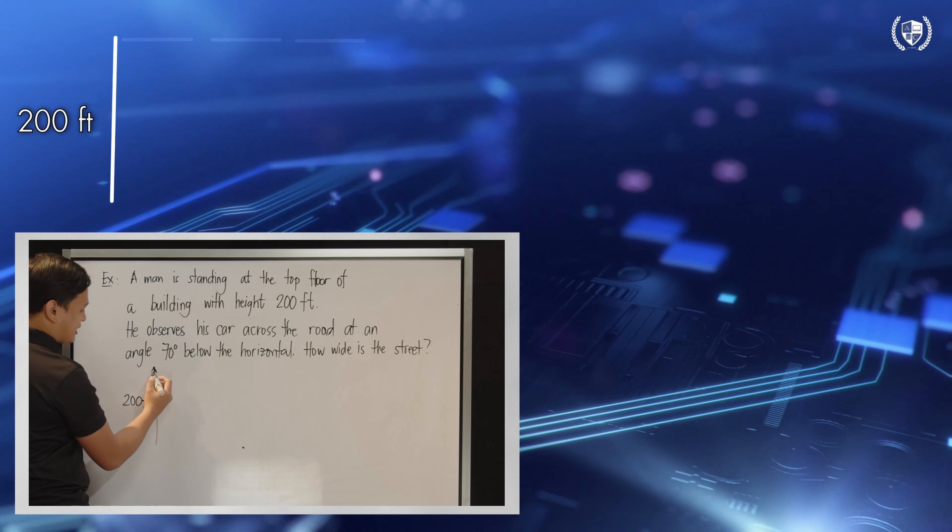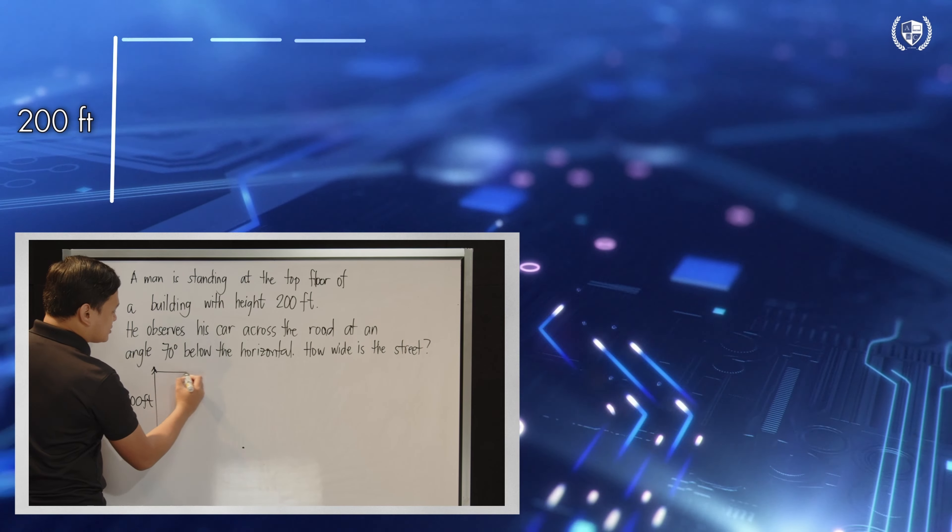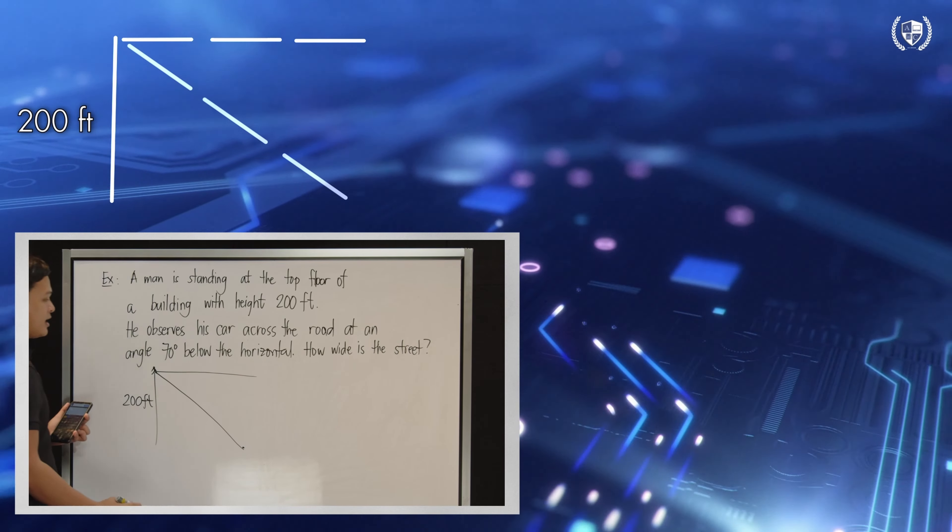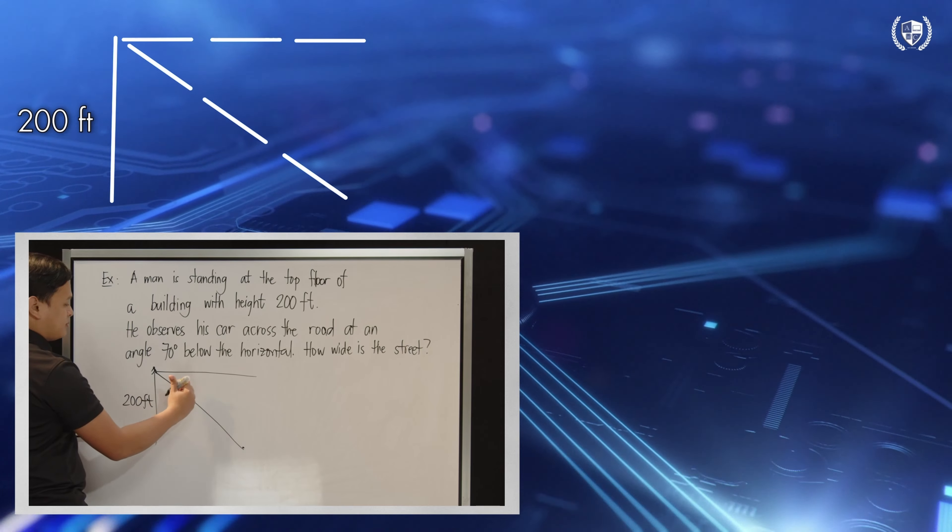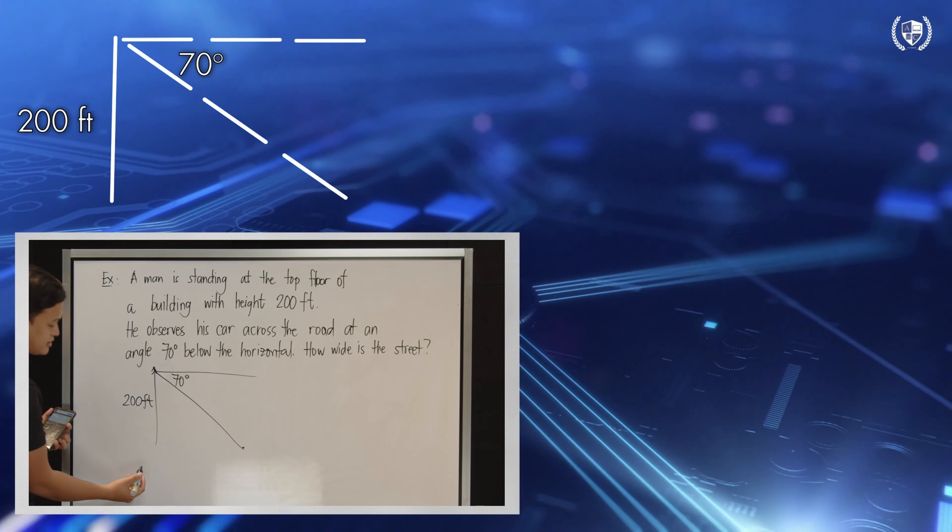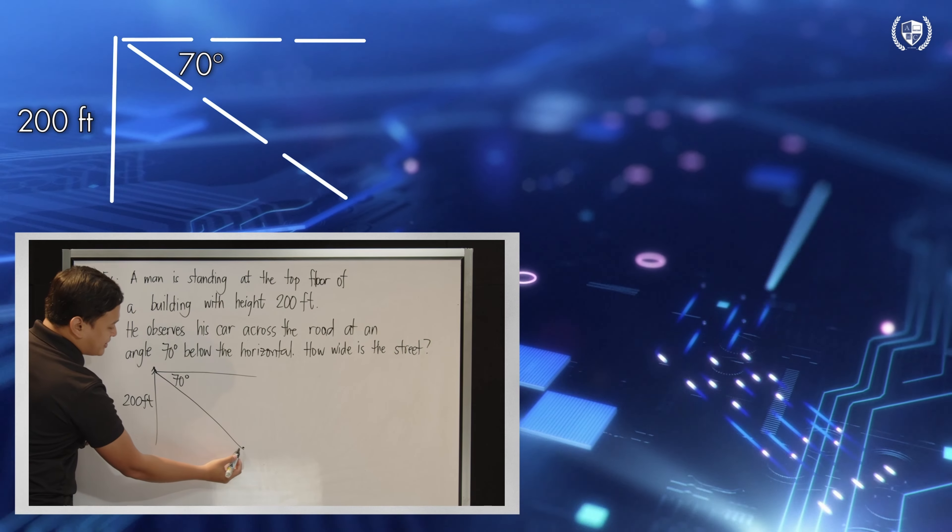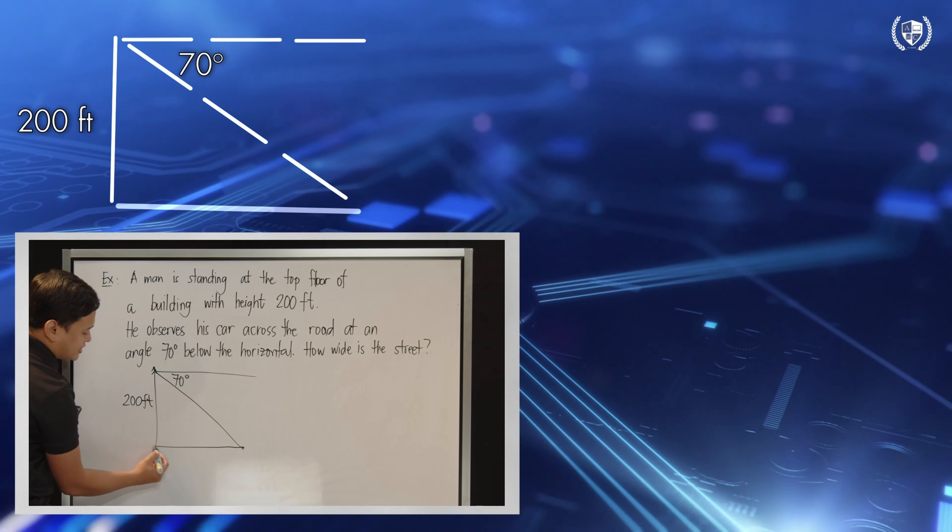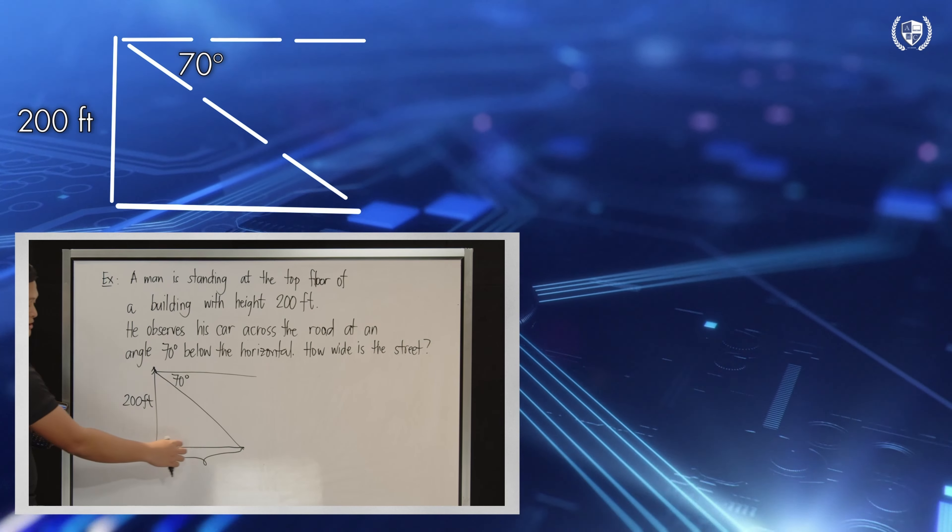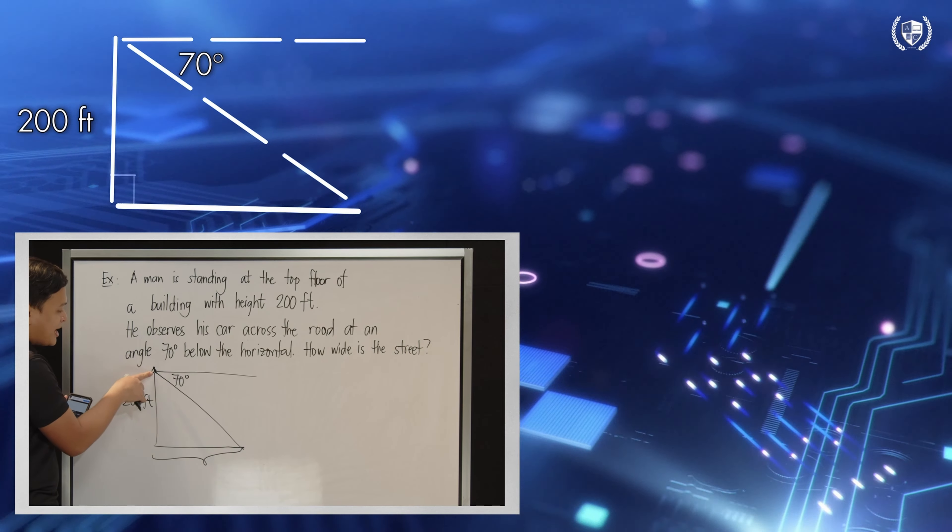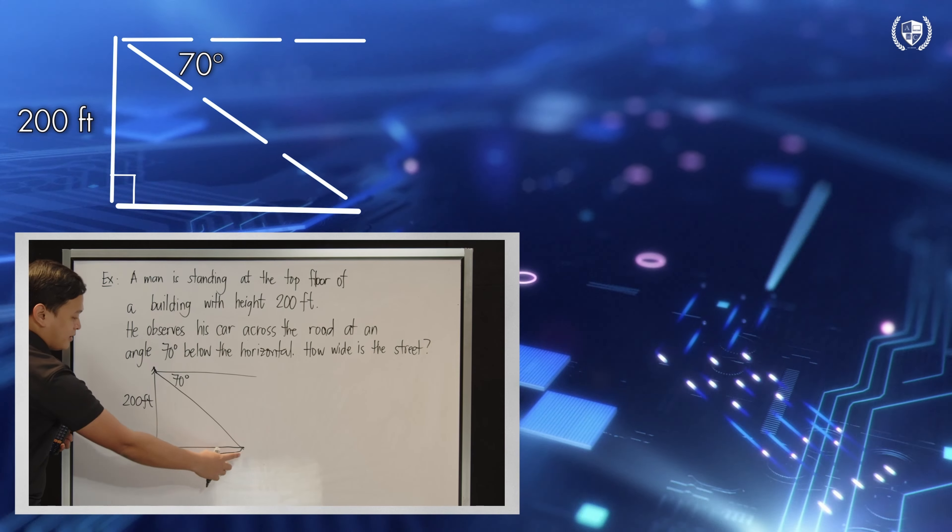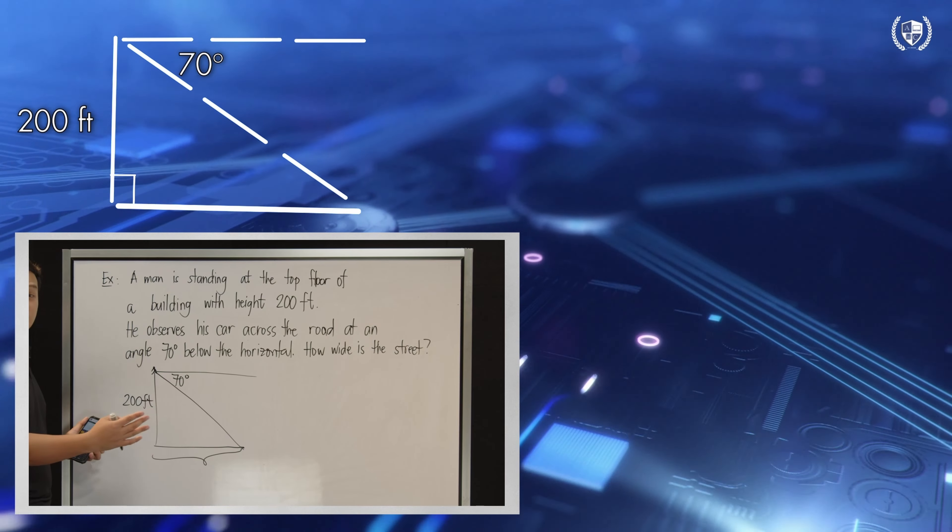70 degrees below the horizontal. Let me draw first the horizontal here. And your line of sight, let's draw it going to the car. And the angle formed there is 70 degrees. We have 70 degrees there. And we are being asked, how wide is the street? What's the width of the street? This one is the missing measurement. We're looking for this. It's not asking how far the person is from his car itself.